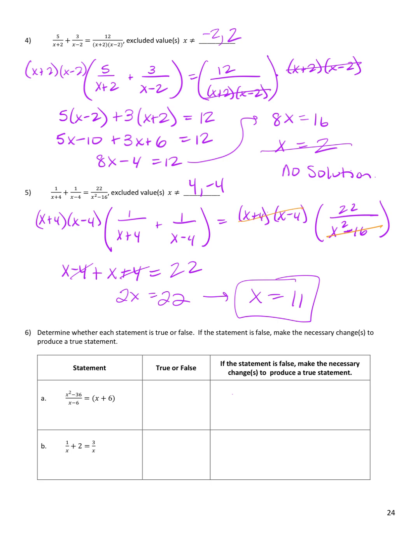Number 6: determine whether each statement is true or false. If false, make the necessary changes to produce a true statement. For part A, x squared minus 36 over x minus 6 — x squared minus 36 is a difference of squares, so it factors to x plus 6 times x minus 6, over x minus 6. Those cancel, and I get x plus 6. True.